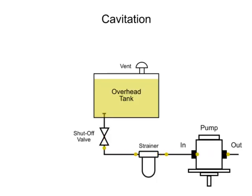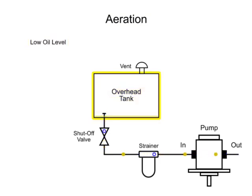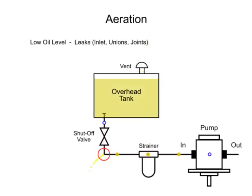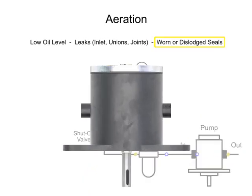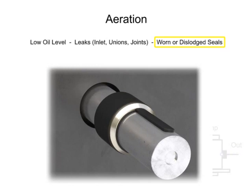Another form of cavitation is called aeration and is caused by air entering the oil stream. This can occur for a variety of reasons, including a low oil level in the reservoir, leaks in the inlet plumbing line — especially at unions and joints — and worn or dislodged seals in other hydraulic components such as pumps, cylinders, or valves.